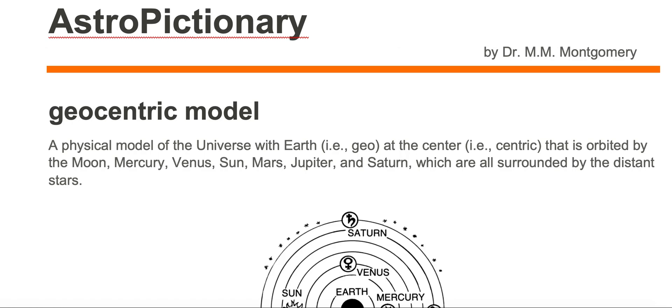That is orbited by the Moon, Mercury, Venus, Sun, Mars, Jupiter, and Saturn, which are all surrounded by distant stars.